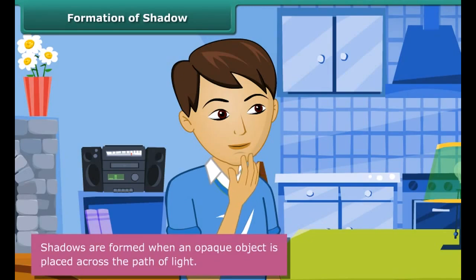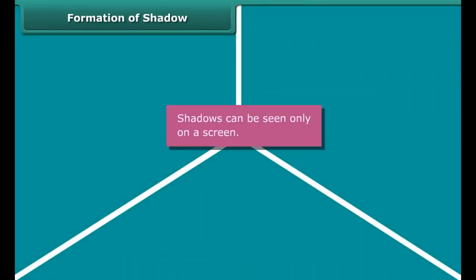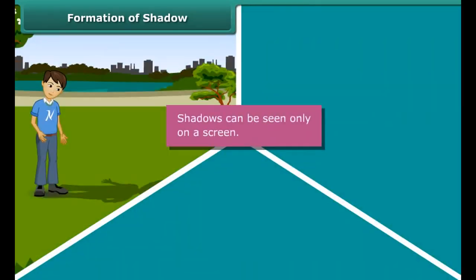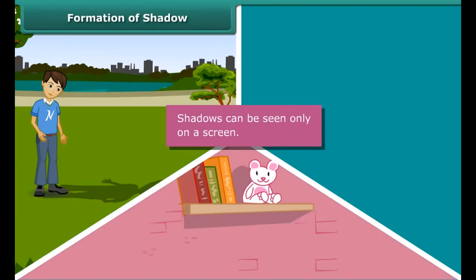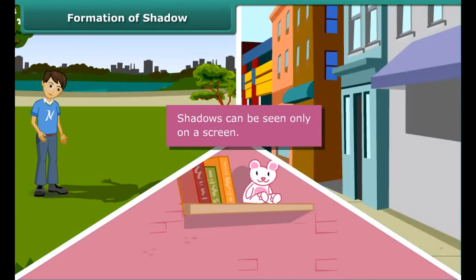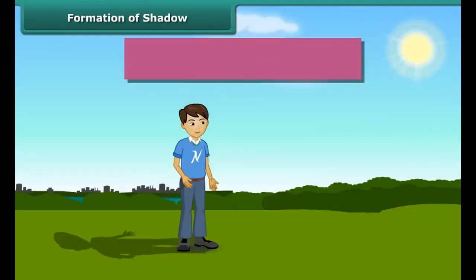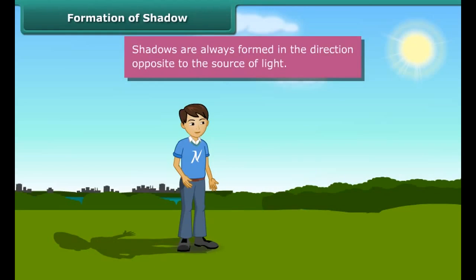On a Sunday morning you are on your way to the market. The sun is shining bright on your face and you see your shadow on the ground behind you. That same evening in the park playing football, the sun's rays fall on your back and you see your shadow on the ground in front of you. After a while the sun sets and there are no more shadows.